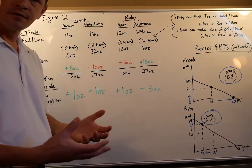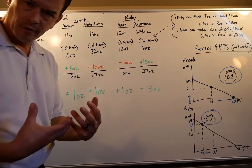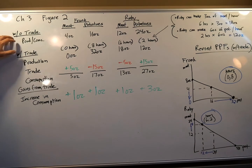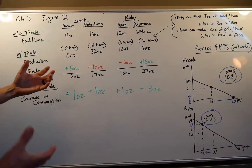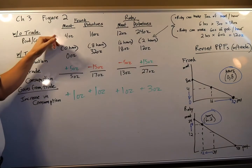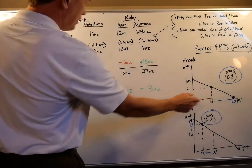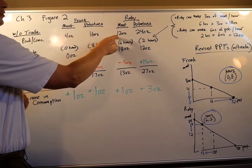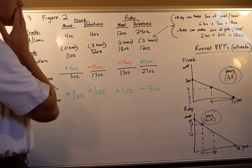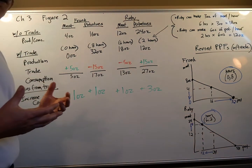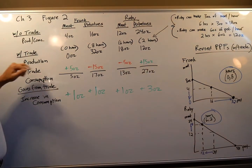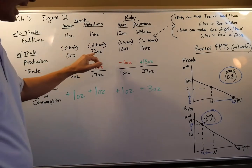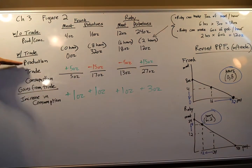This plays out in figure two from chapter three. A key reminder: without trade, what they produce is what they consume. Frank spent time evenly and consumed four ounces of meat and 16 ounces of potatoes. Ruby spent four hours on meat and four on potatoes, consuming 12 and 24 ounces. With trade, we now break out production, trade, and consumption separately. Frank specializes in potatoes - all eight hours, zero meat.